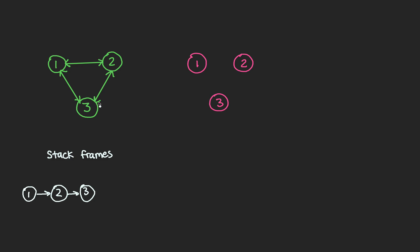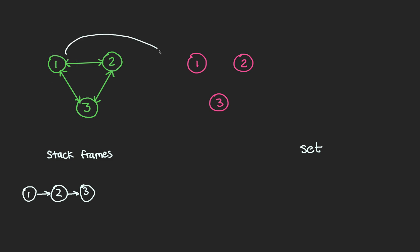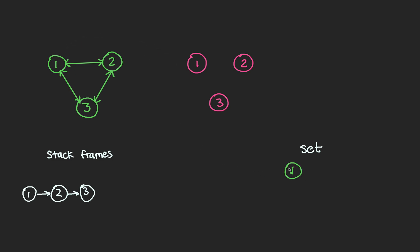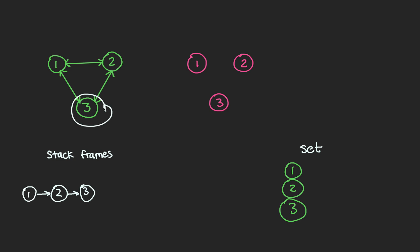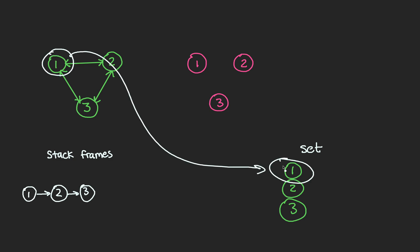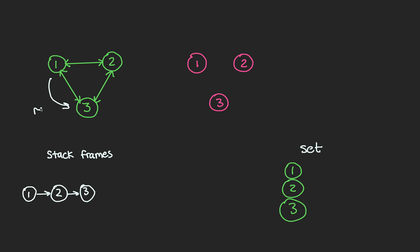A classic solution for this problem is to use a visited set data structure. On any given old node, such as old node 1, we'll not only create its new respective node but also insert the old node into our set. By the time we get to old node 3, we would have added old nodes 1, 2, and 3 into the set. Back on old node 3, we recurse to old node 1, look up its key in our set, observe it's already in there — which means we've already visited it — so we return back to old node 3.